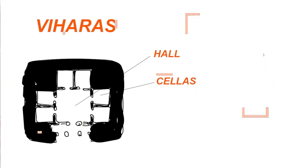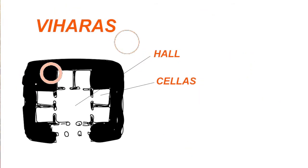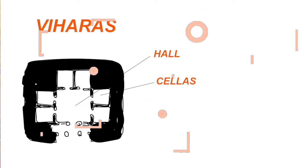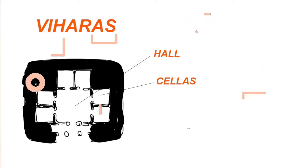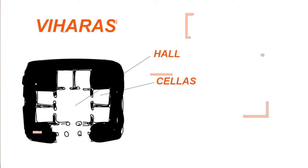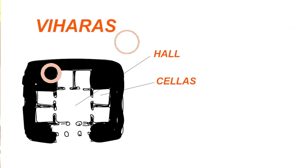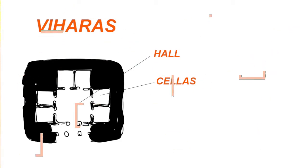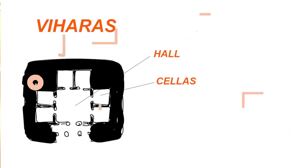Viharas are monasteries that had a central hall along with a few rooms for monks to stay in while traveling. Buddhist monks used to preach their lessons and travel from one part of the country to another. In between, they had these dwellings called Viharas — they had a central hall and various cells where monks could rest and sleep.